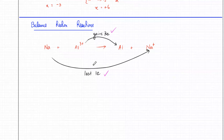Na gives electrons to Al — it loses electrons, the other one gains electrons. But they have to be equal. If this is losing just one electron, how can that one be gaining three? So what I need to do is multiply the Na by three. That means I need three sodiums — each losing one electron, so total electrons lost is also three. Is this clear?